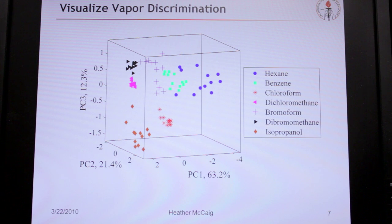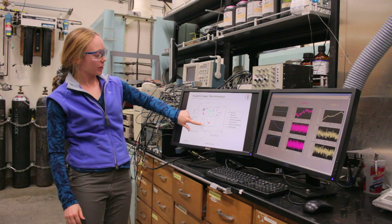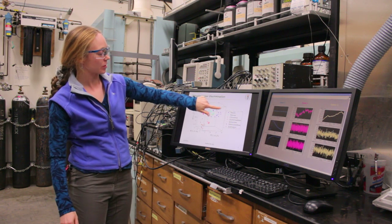We can plot all of that data in three dimensions. This enables us to see that one chemical the array will sniff turns out to be down in this quadrant, while another chemical turns out to be in this quadrant.